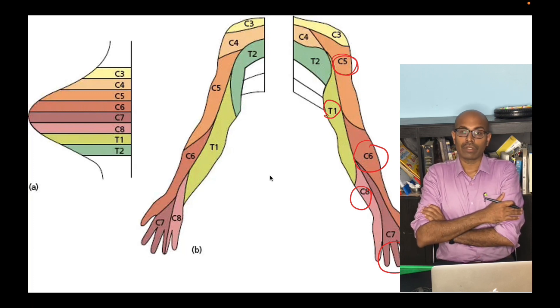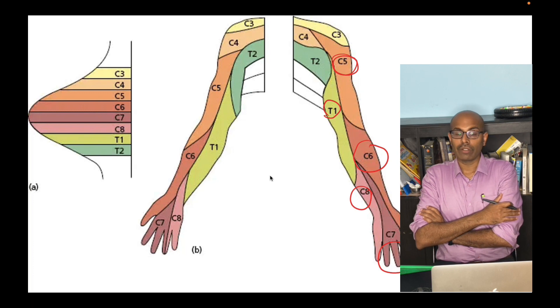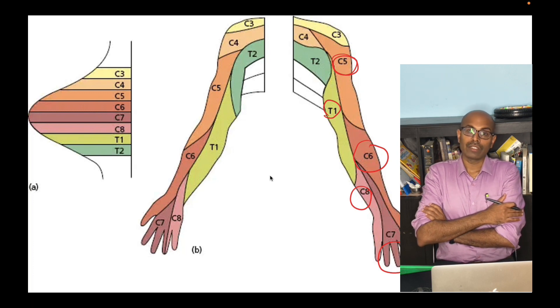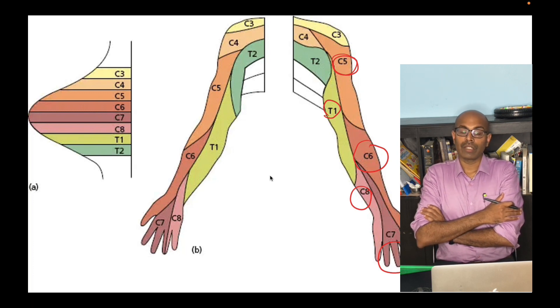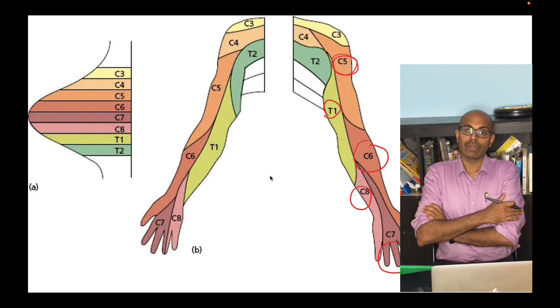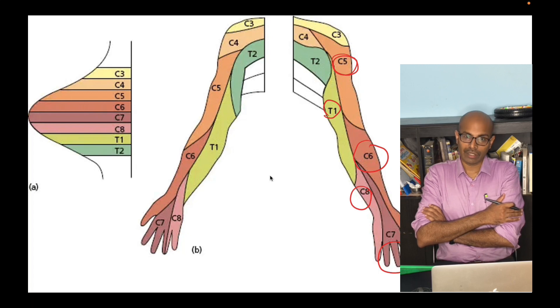This has been a brief overview of the dermatomal and myotomal distribution of the upper limb nerves. Thank you very much for listening. This is Plexus Ortho and my name is Dr. Kannan Kumar — thank you.